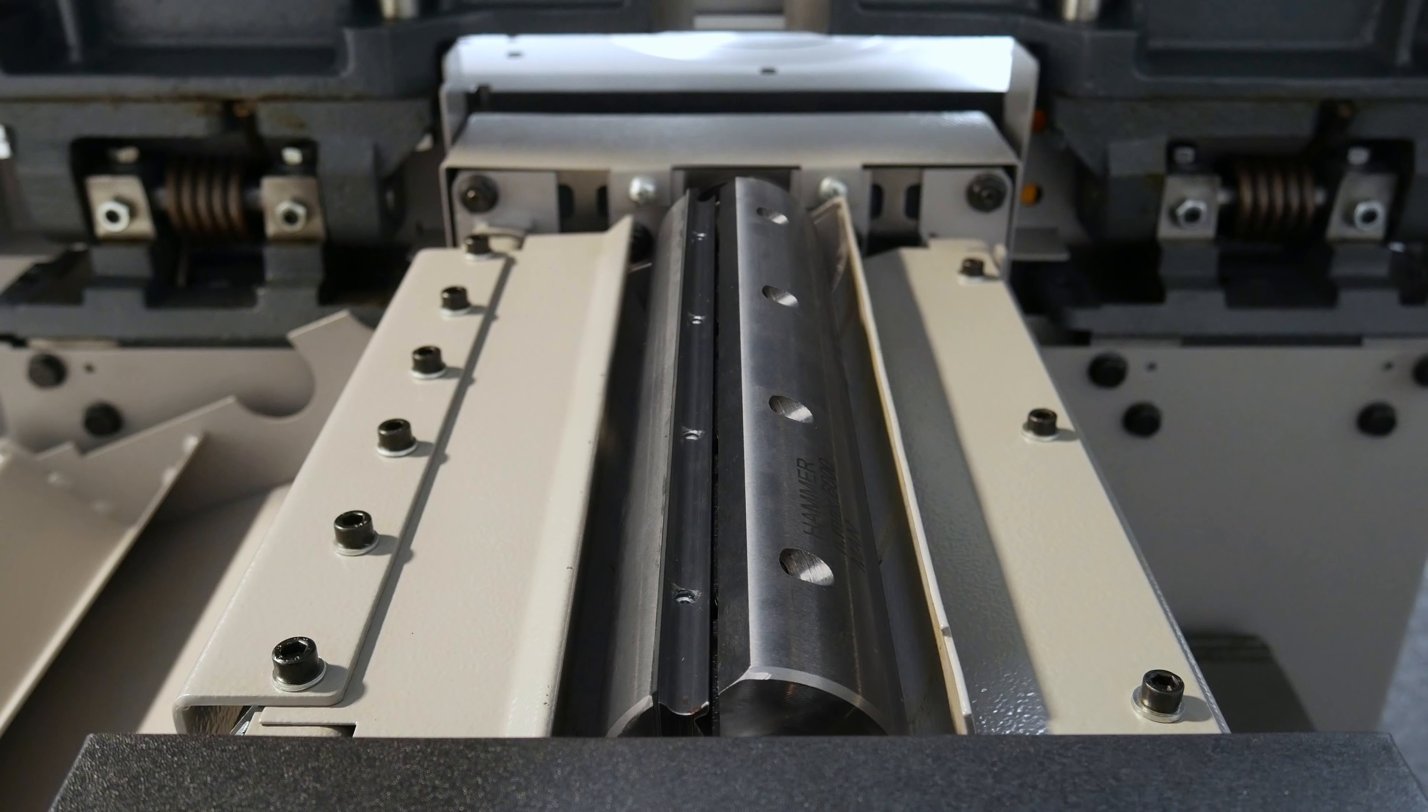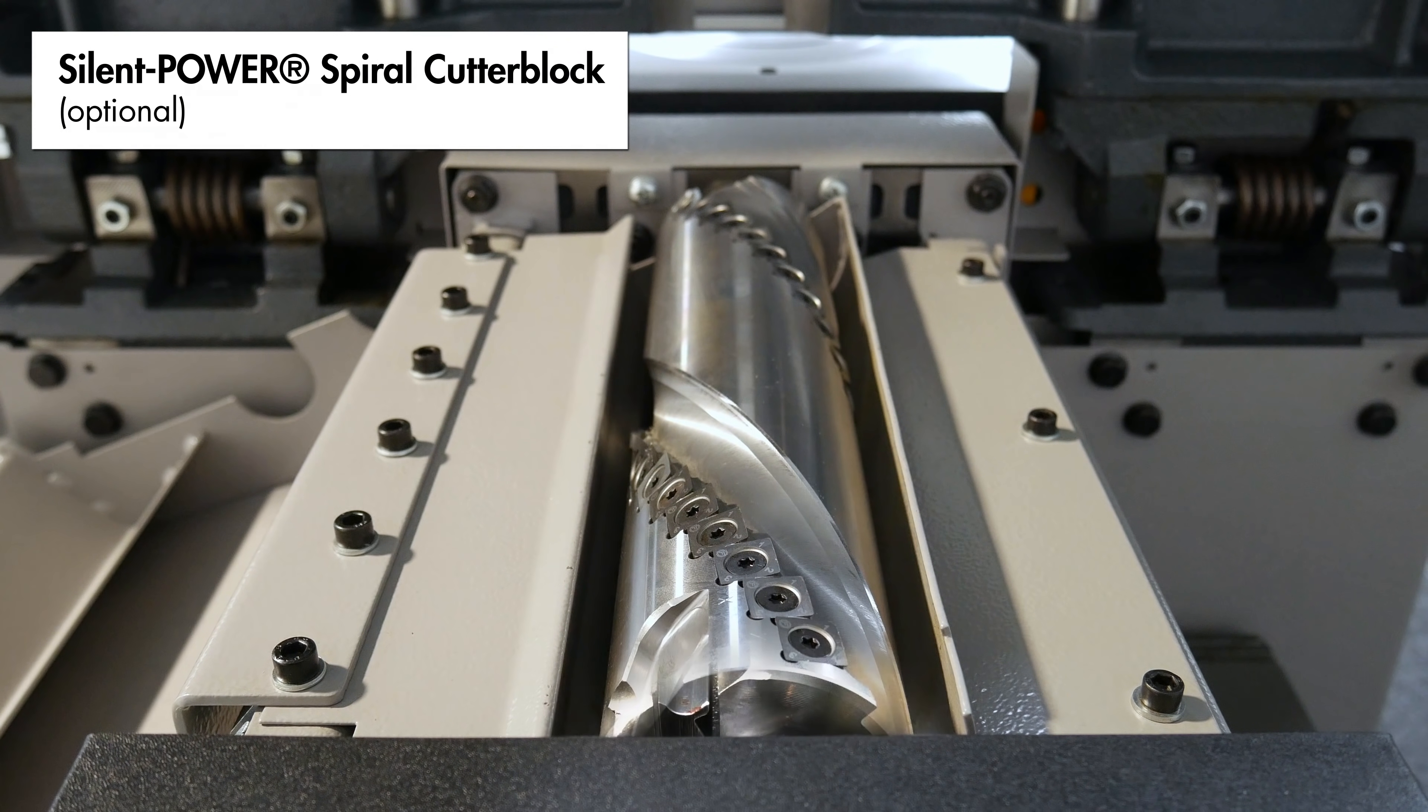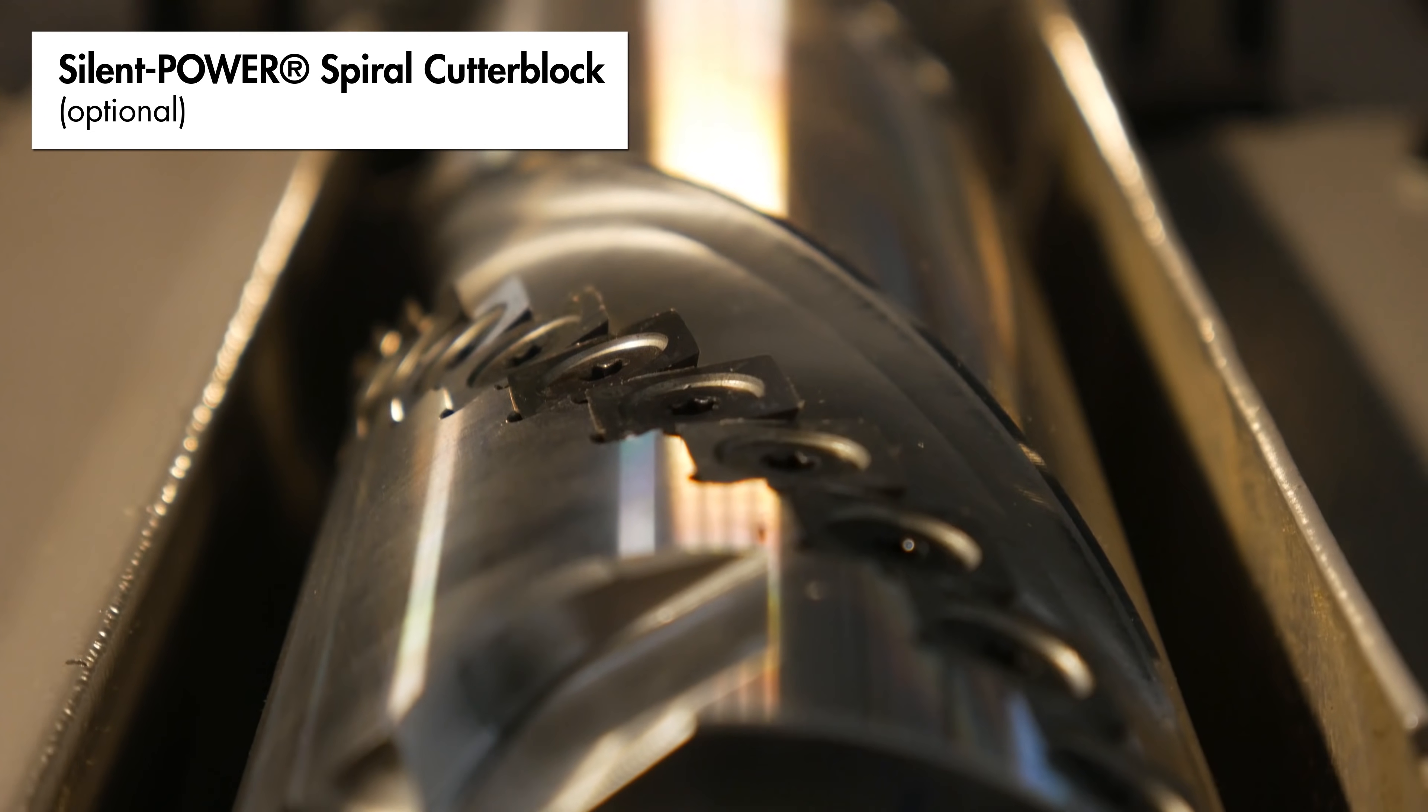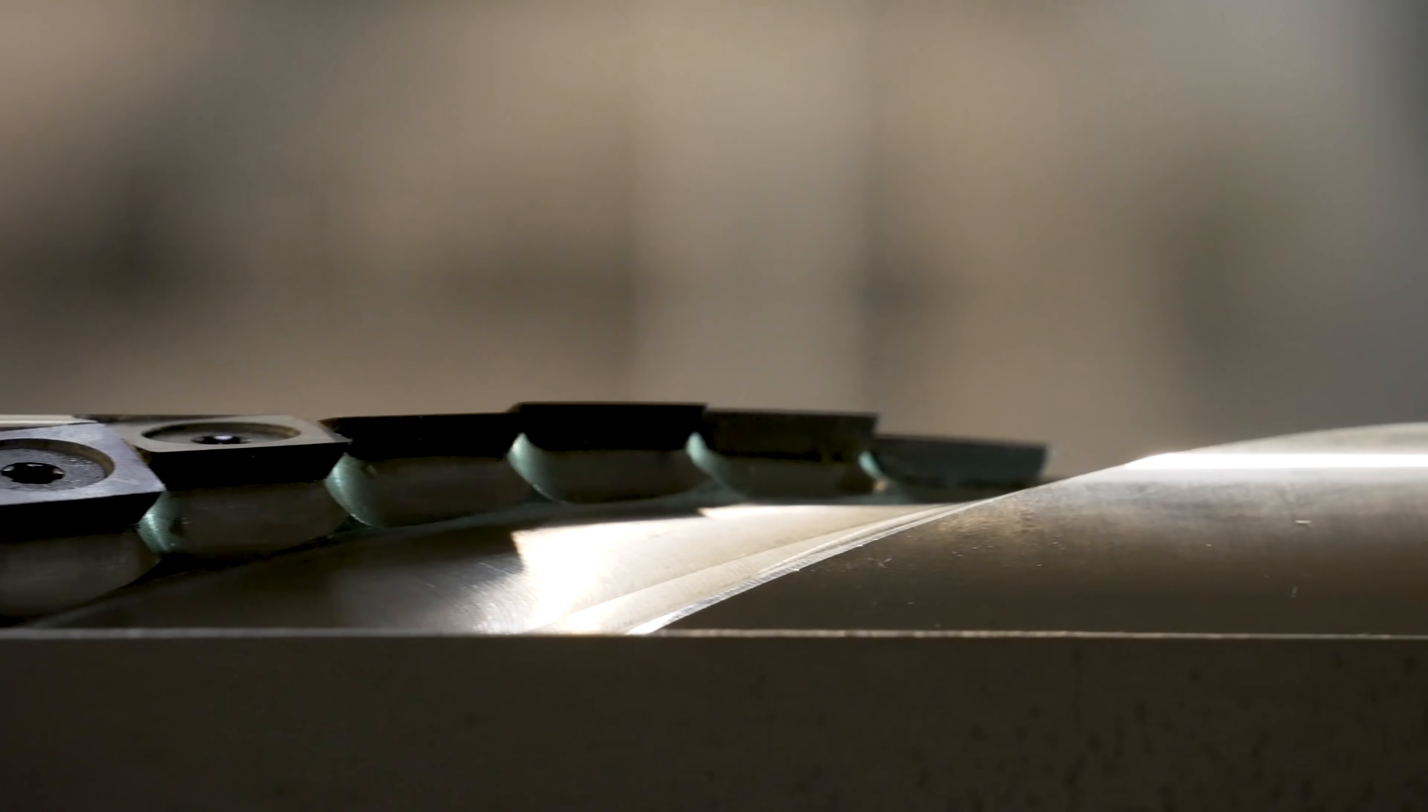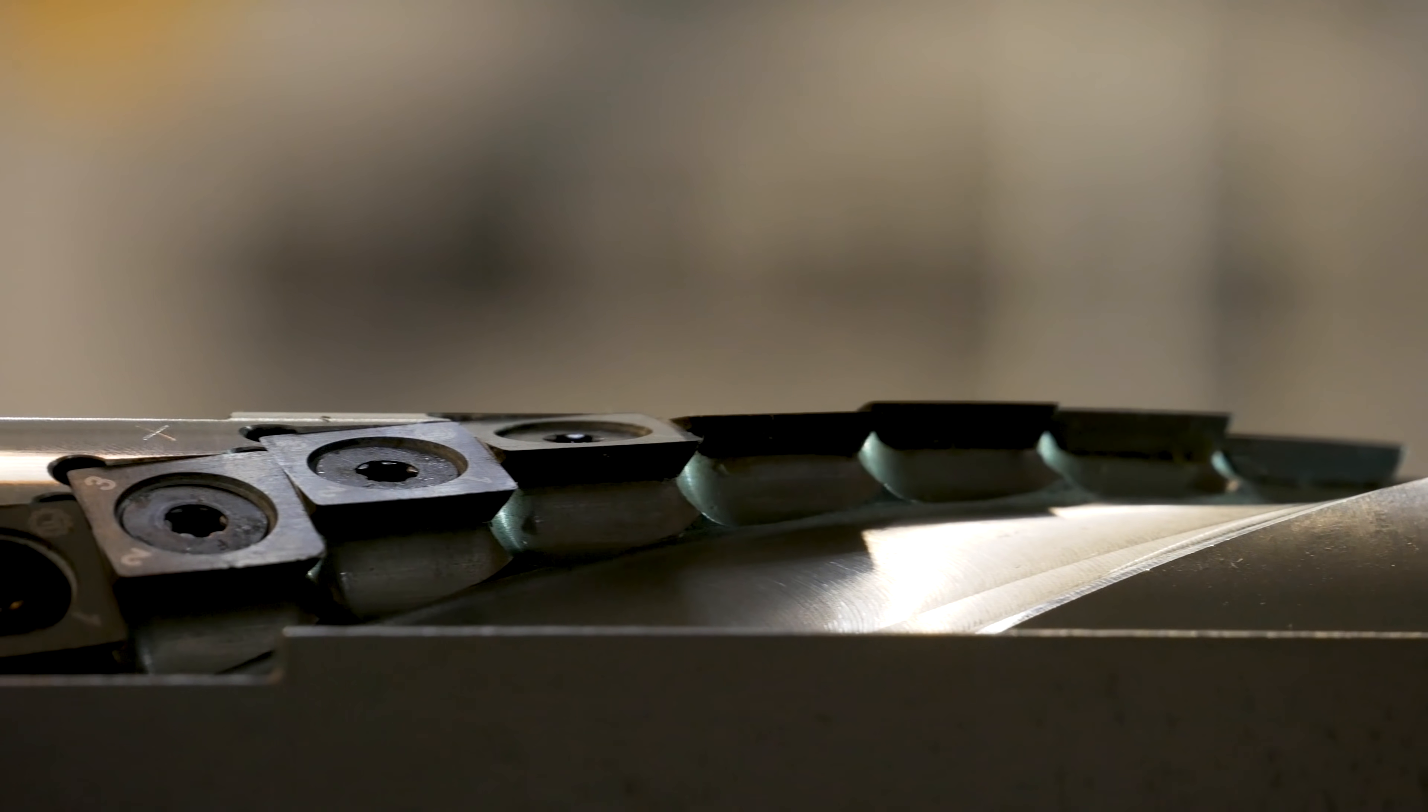As an option, the C331 can be specified with the award-winning Silent Power Spiral Cutter Block, which is exclusive to planers and thicknessers from the Felder Group and features a spiral array of four-sided tungsten carbide knives, which provide a continuous pulling cut for tear-free results on all types of wood.